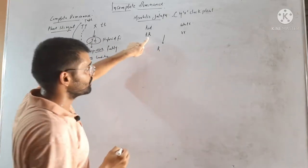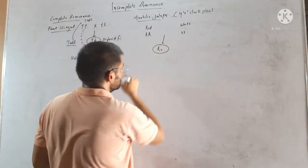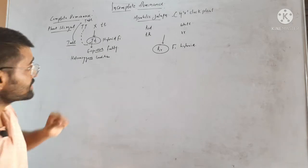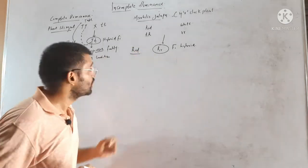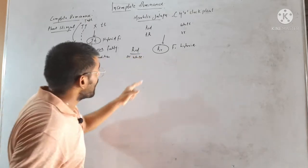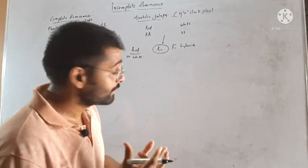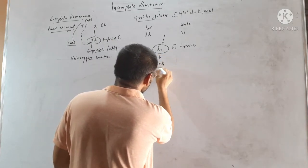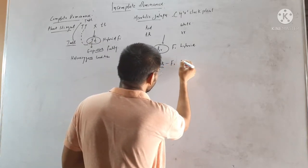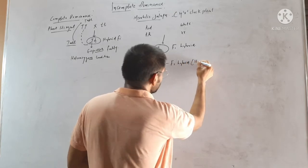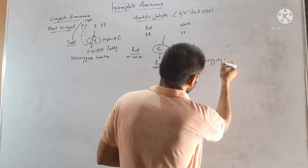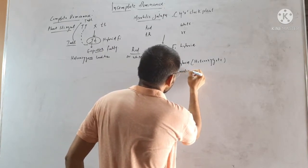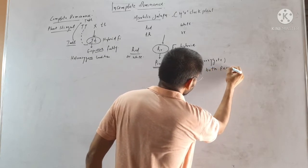From this cross, capital R comes from one parent and small r from the other, giving us the F1 hybrid (Rr). According to Mendel's law of dominance, it must be either red or white — either this allele will be dominant or the other. But here, the F1 hybrid is pink.